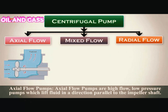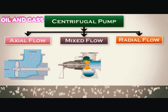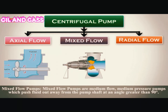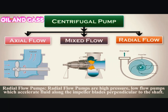Axial flow pumps are high flow, low pressure pumps which lift fluid in a direction parallel to the impeller shaft. Mixed flow pumps are medium flow, medium pressure pumps which push fluid out away from the pump shaft at an angle greater than 90 degrees. Radial flow pumps are high pressure, low flow pumps which accelerate fluid along the impeller blades perpendicular to the shaft.